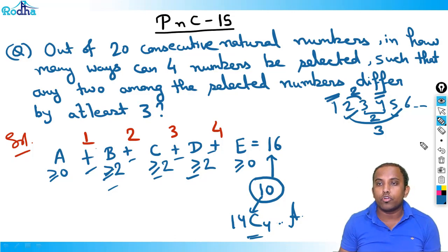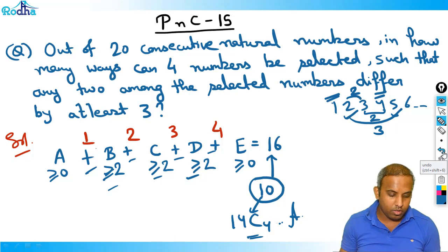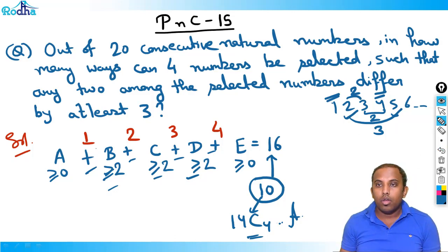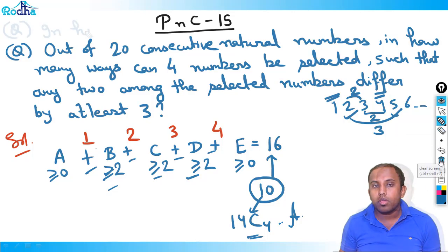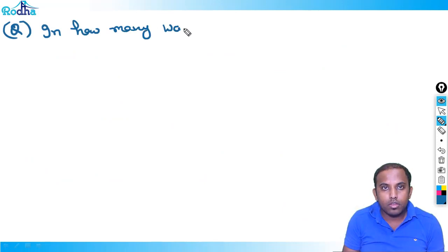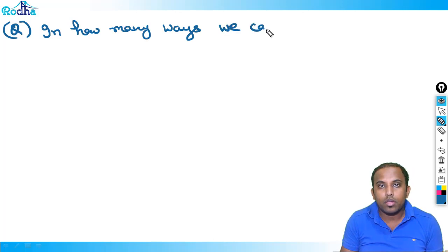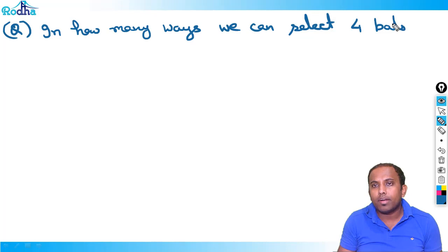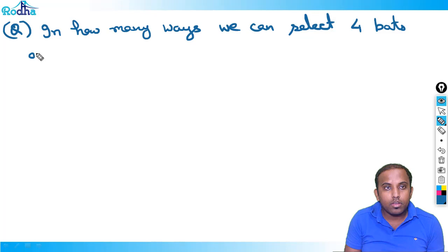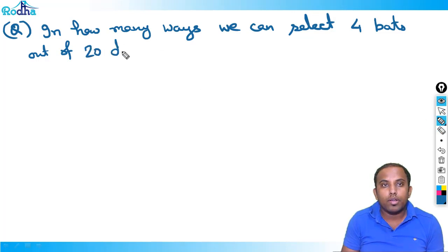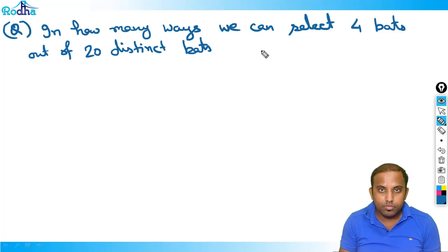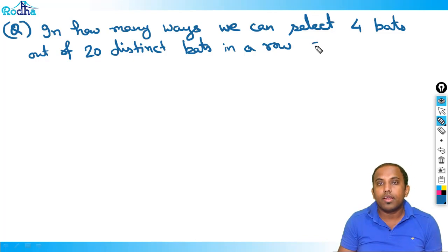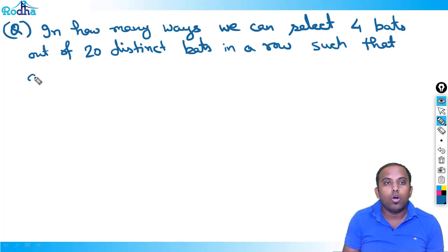Now let's put a few more twists in this kind of question. In how many ways can we select four bats out of 20 distinct bats in a row such that all are consecutive?